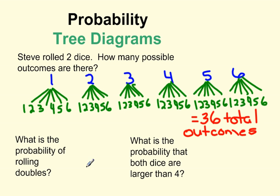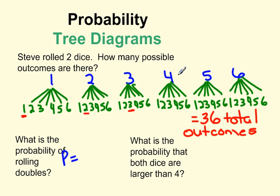What is the probability of rolling doubles? Doubles happen if I roll the same number on both dice. If I roll a one and a one, that's one pair of doubles. Then two and two, three and three, four and four, five and five, and six and six — that happens six times out of a possible 36. That can be reduced to one over six.